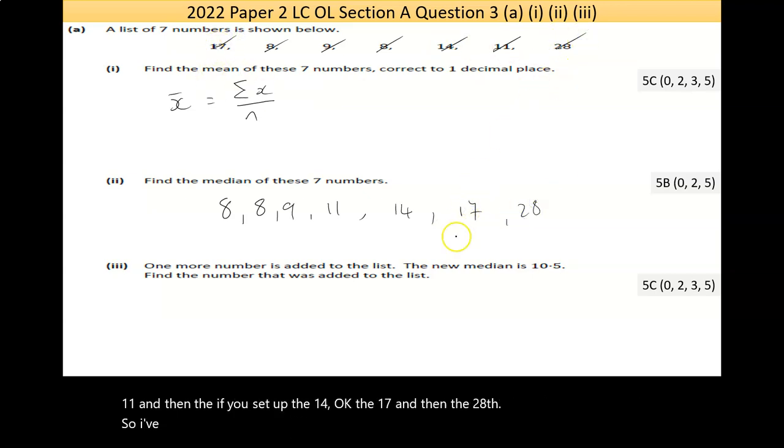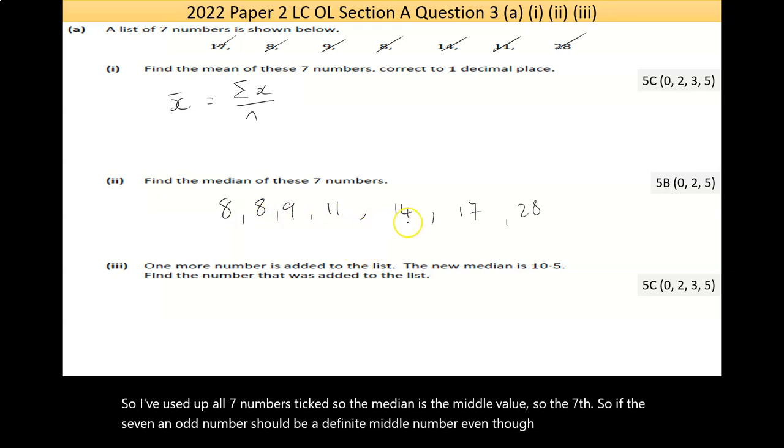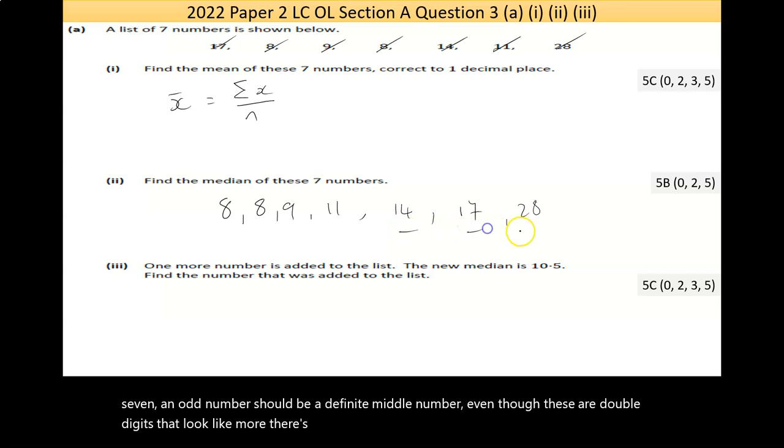So I've used up all 7 numbers, they're ticked, so the median is the middle value. There's 7, an odd number, so it should be a definite middle number. Even though these are double digits, they look like more. There's 3 numbers above, 3 numbers below, so 11 is my median.